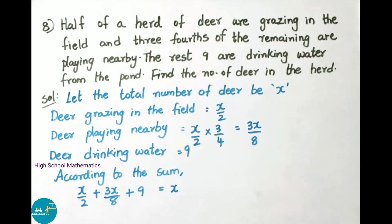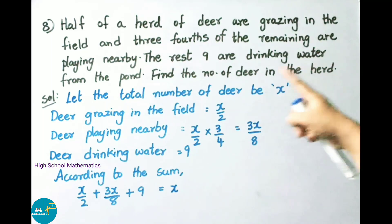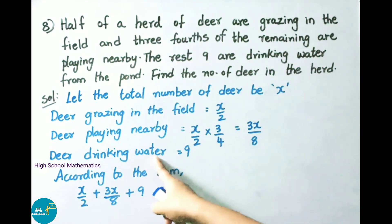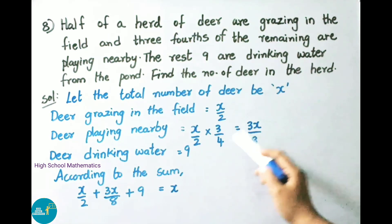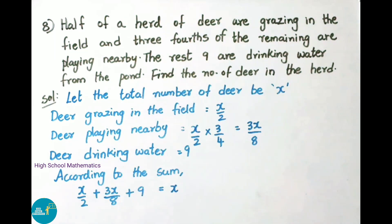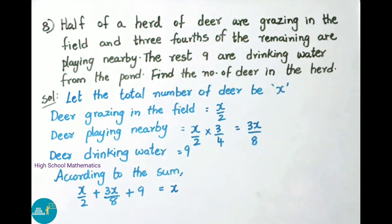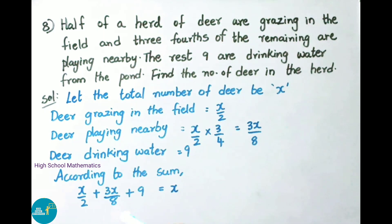The rest 9 are drinking water from the pond. According to the sum, all three values must add up to the total number of deer in the herd. So we have: x by 2 plus 3x by 8 plus 9 equals x.